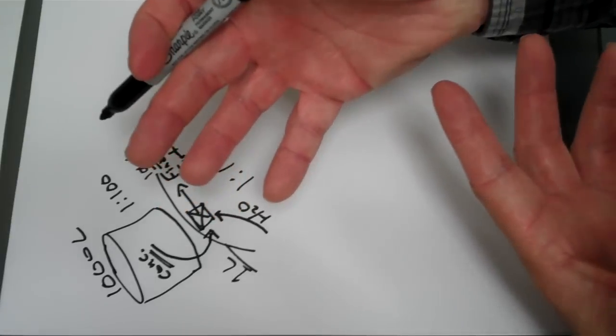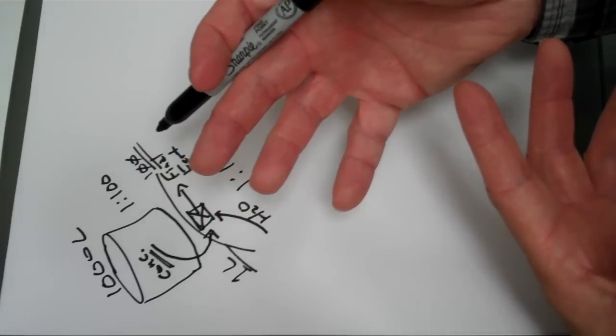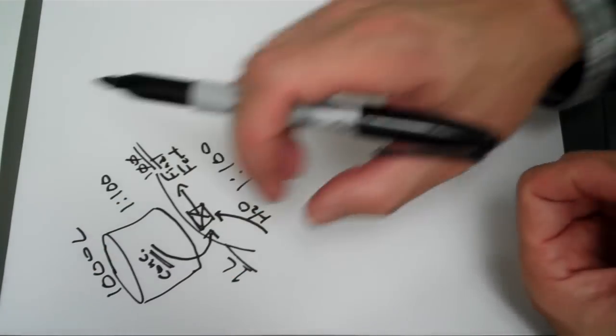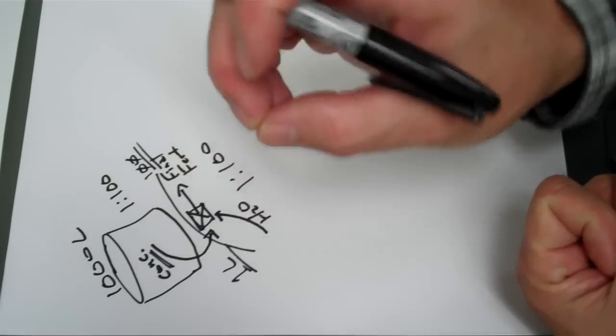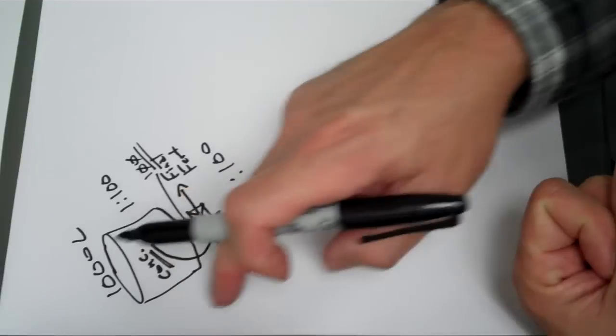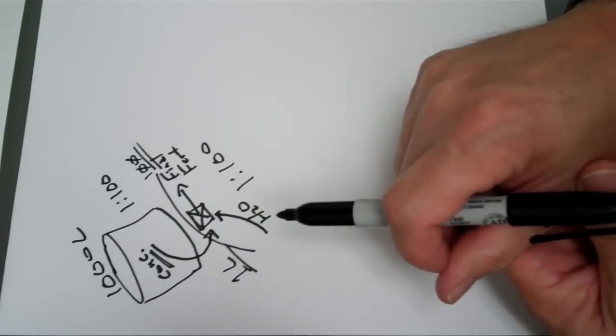So when we do our fertilizer calculations, we're putting a certain amount of fertilizer in here to make it much more concentrated so that when it gets diluted, it comes out what we want.